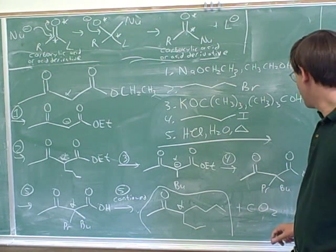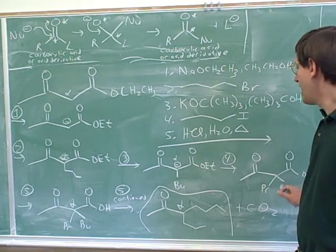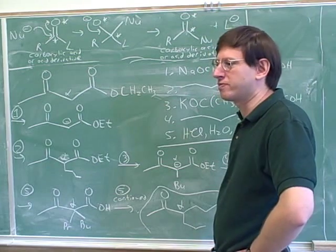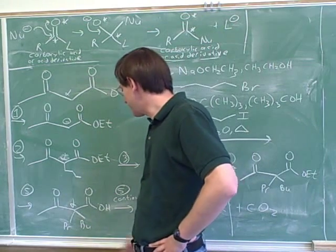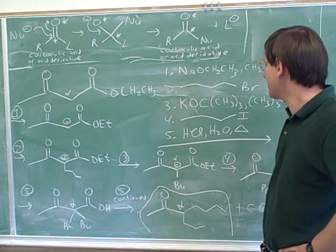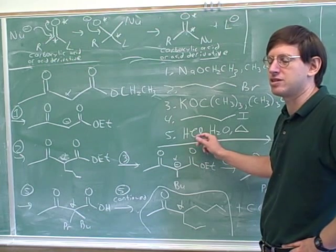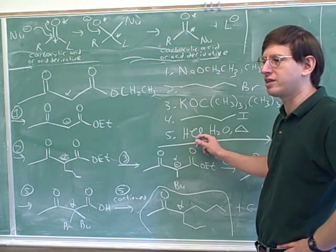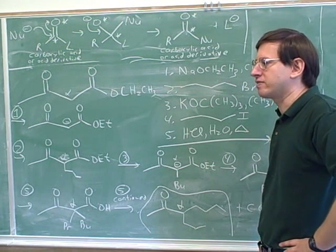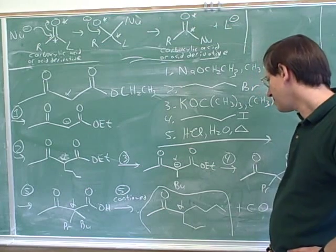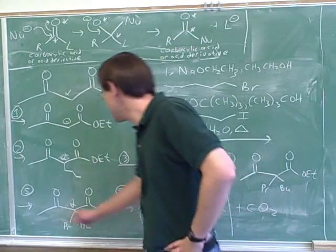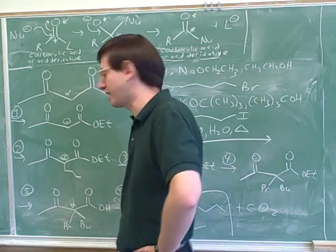In step five, first hydrolysis occurs, and then once we get the carboxylic acid, decarboxylation. A lot of people forget this — they're so happy they got the carboxylic acid that they forget under hot conditions it can still decarboxylate. You can't think that only one thing can happen in one numbered step. Both hydrolysis and decarboxylation happen in step five, so when you're taking a test you have to make sure you don't stop too soon. This works because it's a beta-carbonyl carboxylic acid.